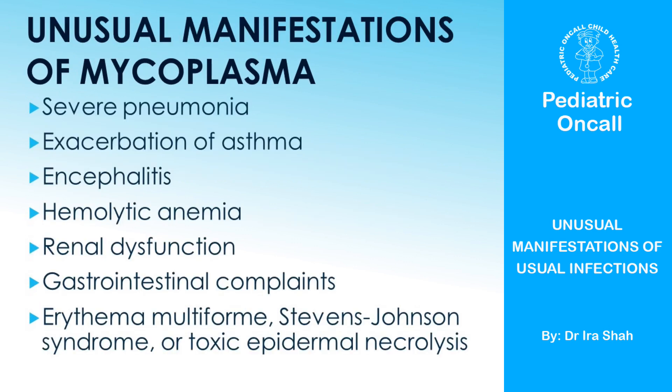This is one aspect I really wanted to discuss because this is what we see in clinical practice and we really don't think about mycoplasma. The unusual manifestations of mycoplasma can be severe pneumonia, exacerbation of asthma, encephalitis, hemolytic anemia, renal dysfunction, GI complaints, and even Stevens-Johnson syndrome. But these are really unusual manifestations.